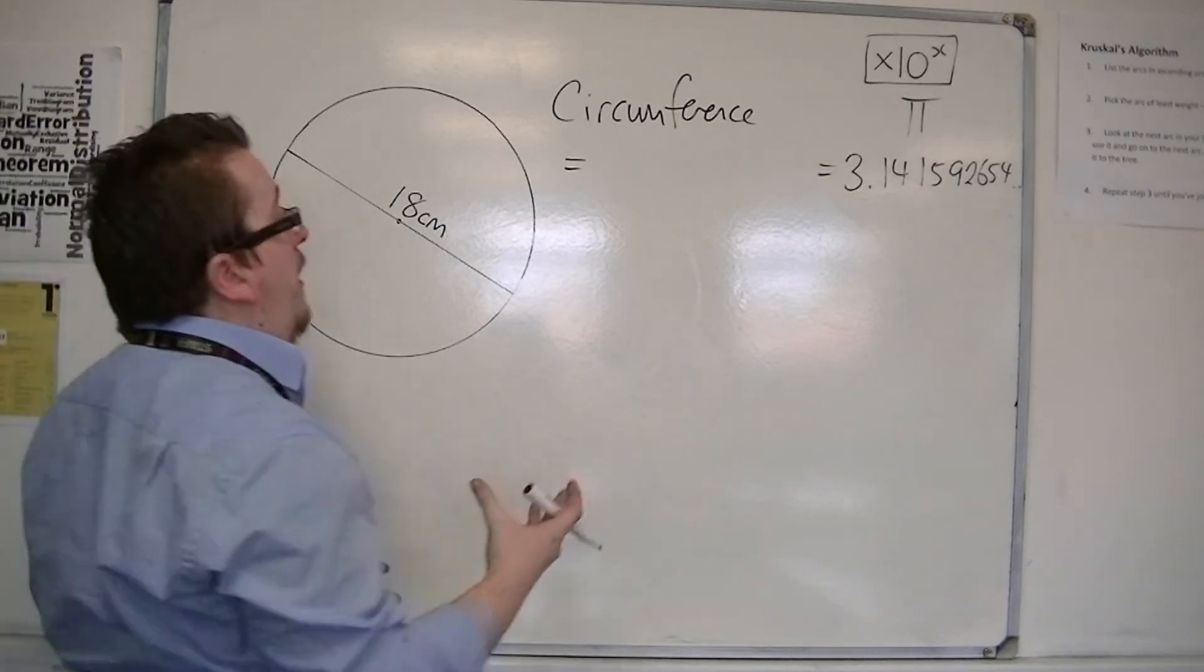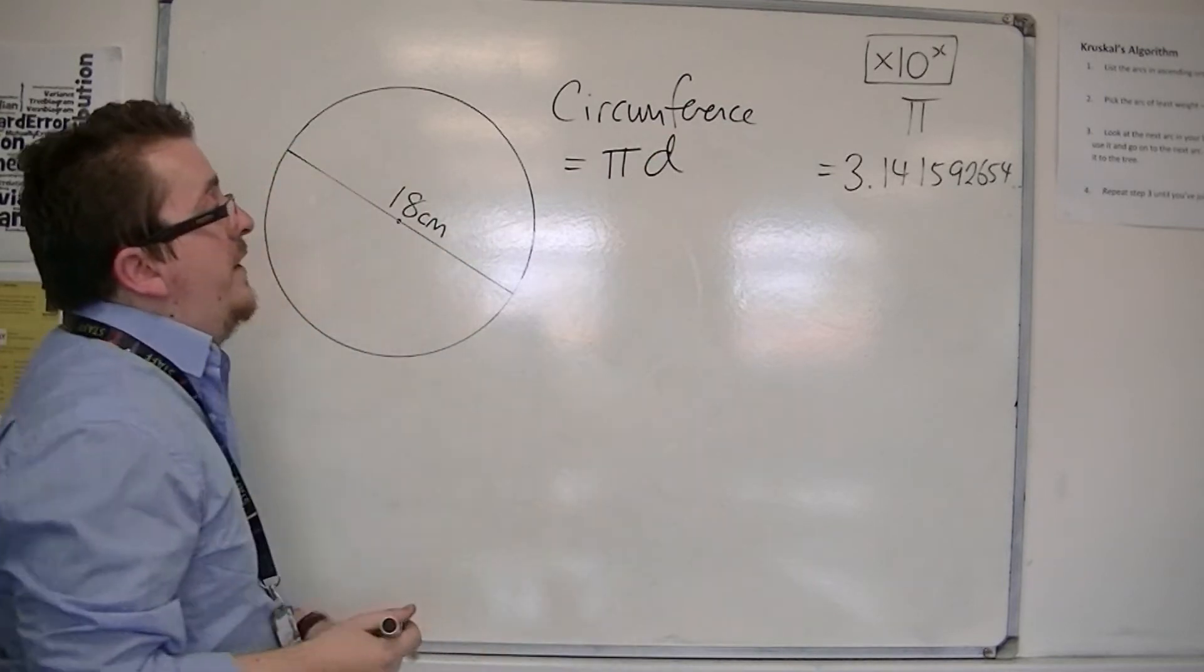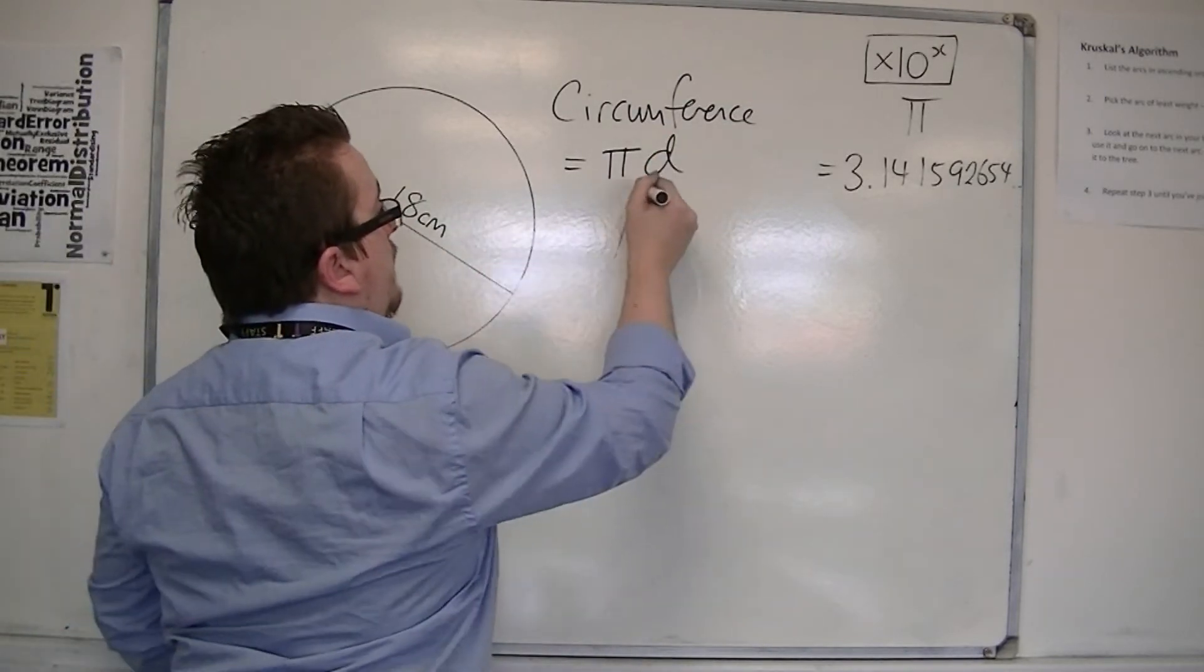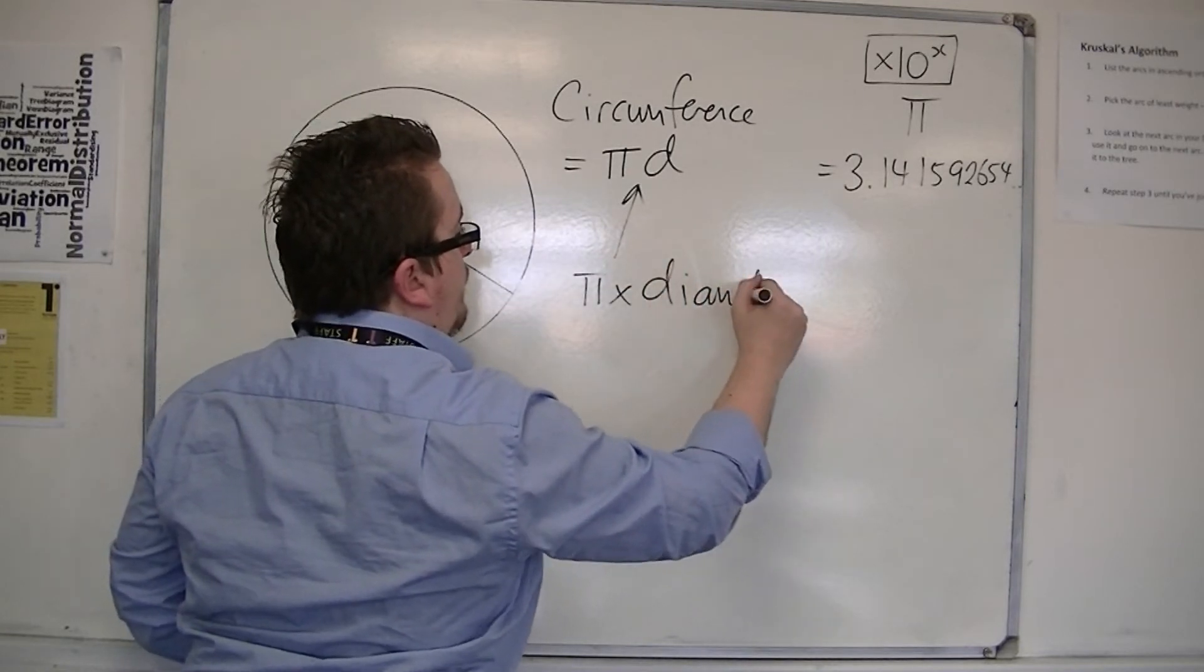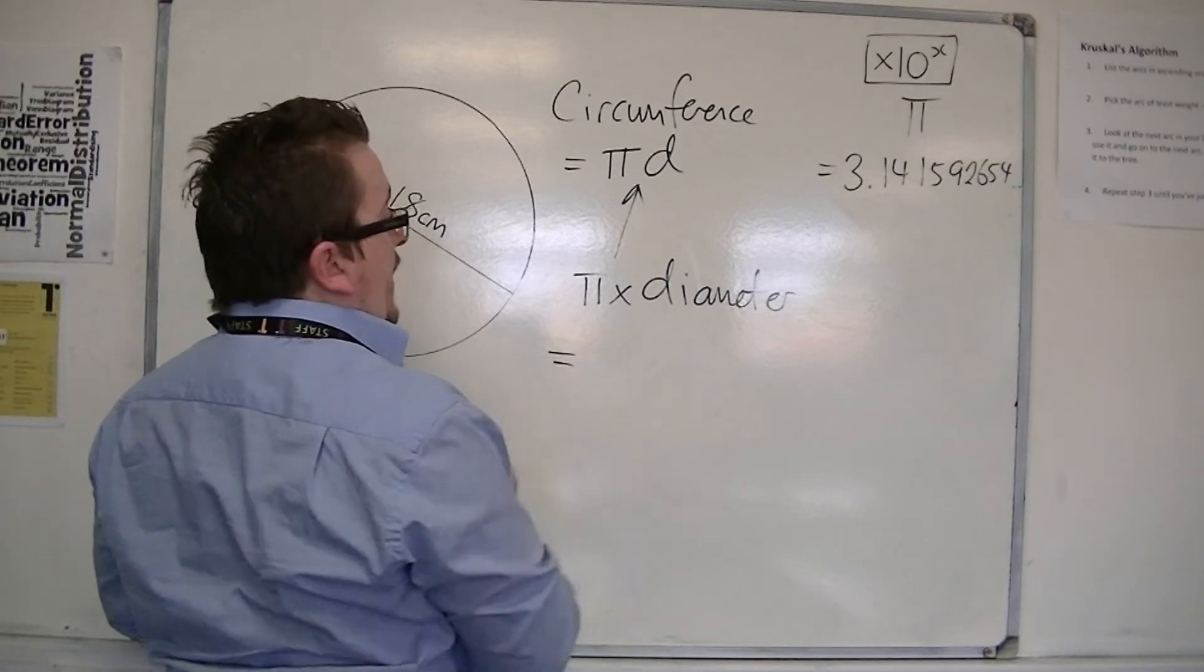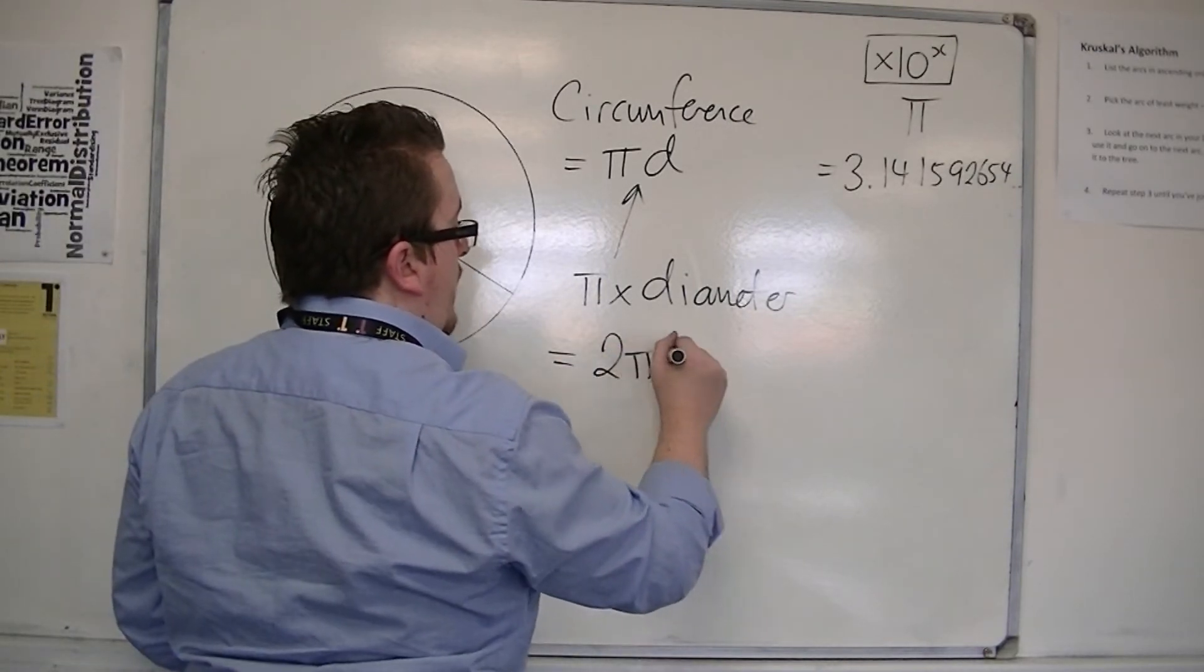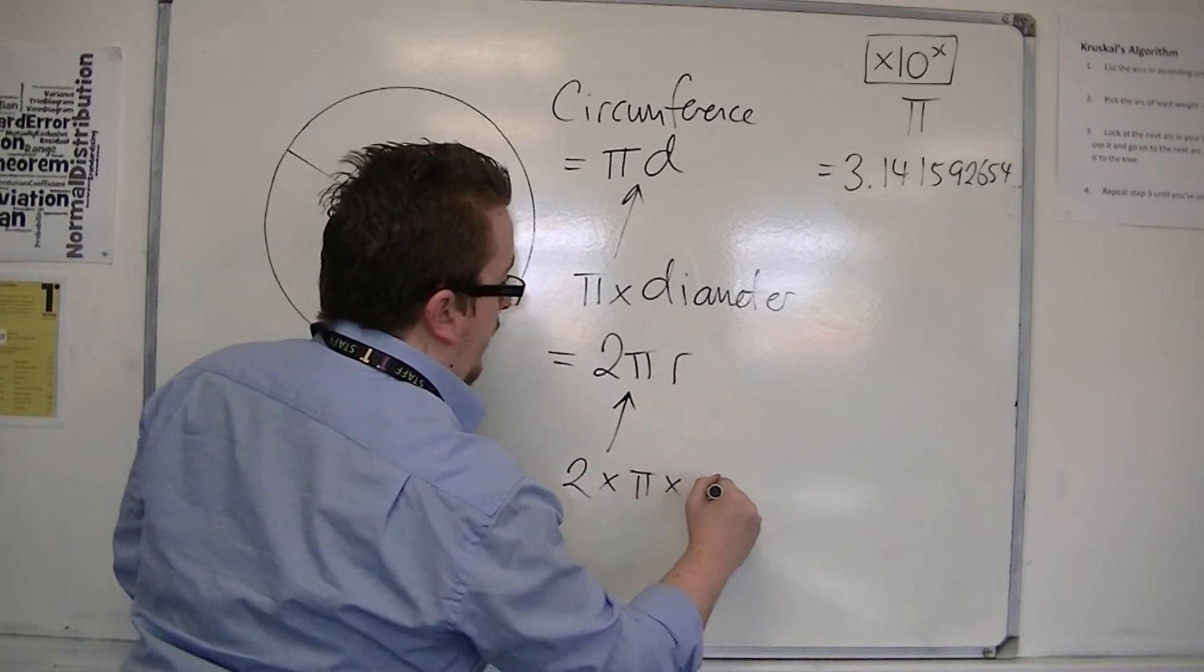You can either use pi times d, or πd. This means pi times diameter. Or, it's the same as 2πr, which is 2 times pi times the radius.